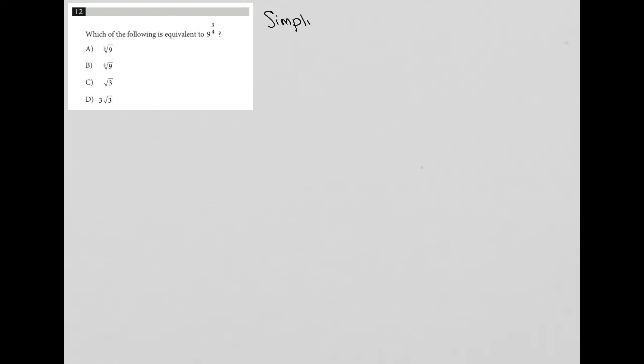This question looks like a simplified question — we know that because it's one line long. Simplified questions are typically between one and three lines. We see the expression nine to the three-fourths power. This is the non-calculator section of the test, so I can't just put that into my calculator and find an answer.